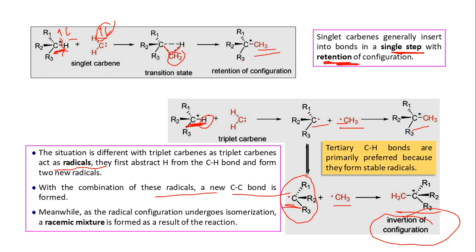Tertiary C-H bonds are primarily preferred for insertion, because whether it is a carbocation or a radical, if it is tertiary it is more stable — so that is why its formation is preferred.